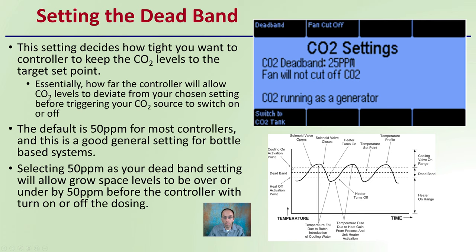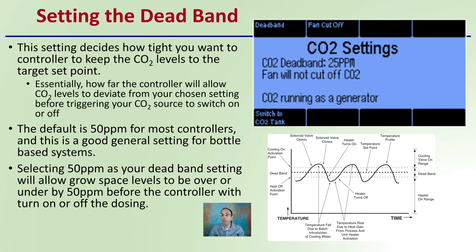How do we set the dead band? We set that target level above or below. This setting decides how tight you want the controller to keep carbon dioxide levels to the target set point — essentially how far the controller will allow levels to deviate before triggering the carbon dioxide source to switch on or off. The default for most systems is around 50 parts per million, which is a good general setting for bottle-based systems. Some growers want something tighter; we can see this one set to 25 parts per million. You don't want it too tight or too large — 50 ppm is usually the starting point, and you can adjust from there.